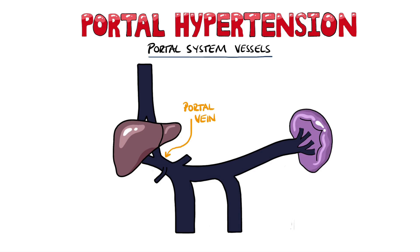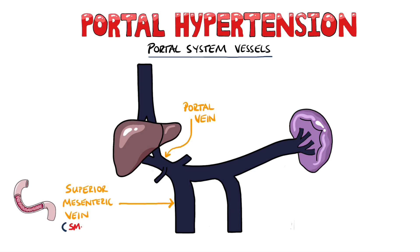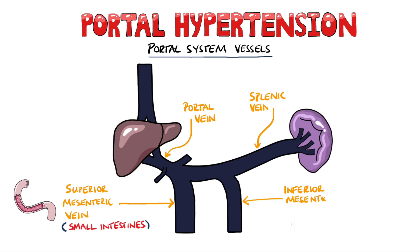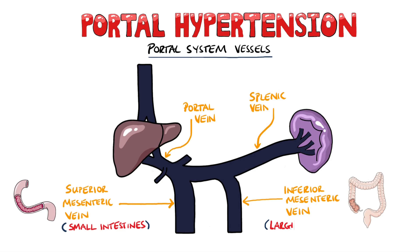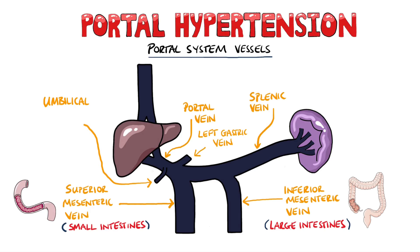The portal system refers to the portal vein, which drains into the liver. The main vessels that link to the portal vein are the superior mesenteric vein, which comes from the small intestines, the splenic vein, which carries blood from the spleen. The inferior mesenteric vein connects onto the splenic vein and carries blood from the large intestine, and the gastric veins also connect onto the portal vein. Another thing to note is the umbilical vein, which is normally obliterated and becomes the round ligament of the liver.